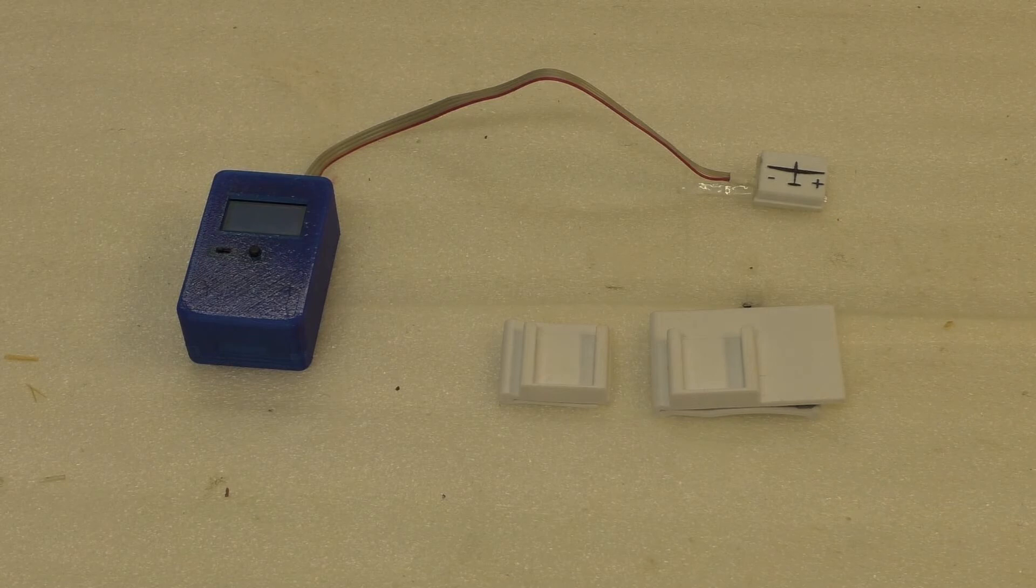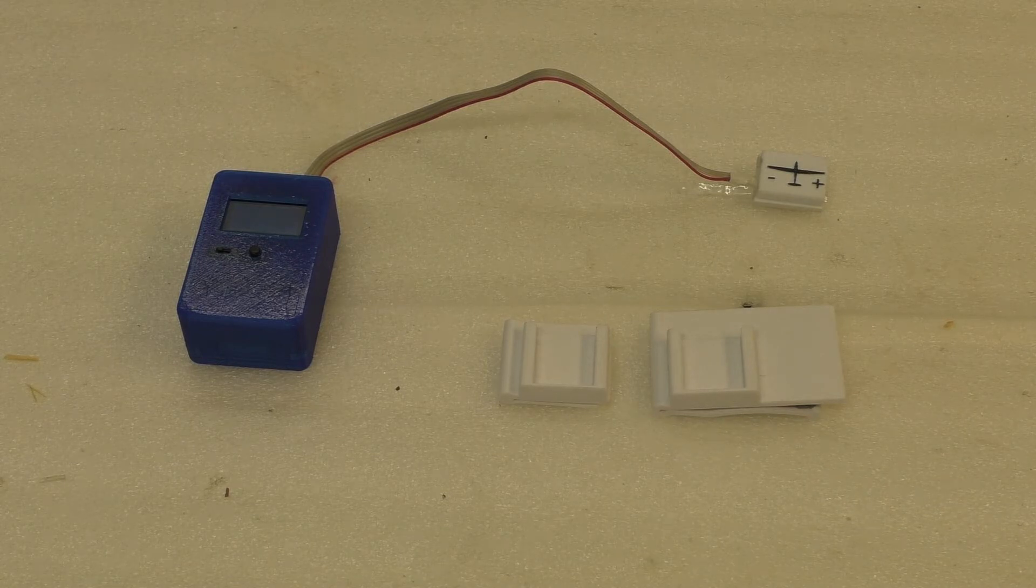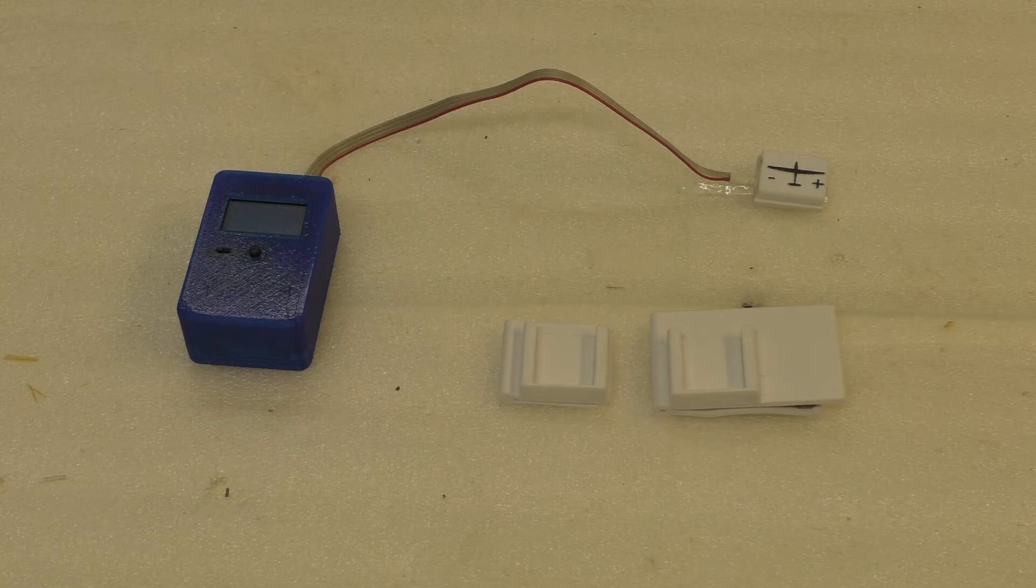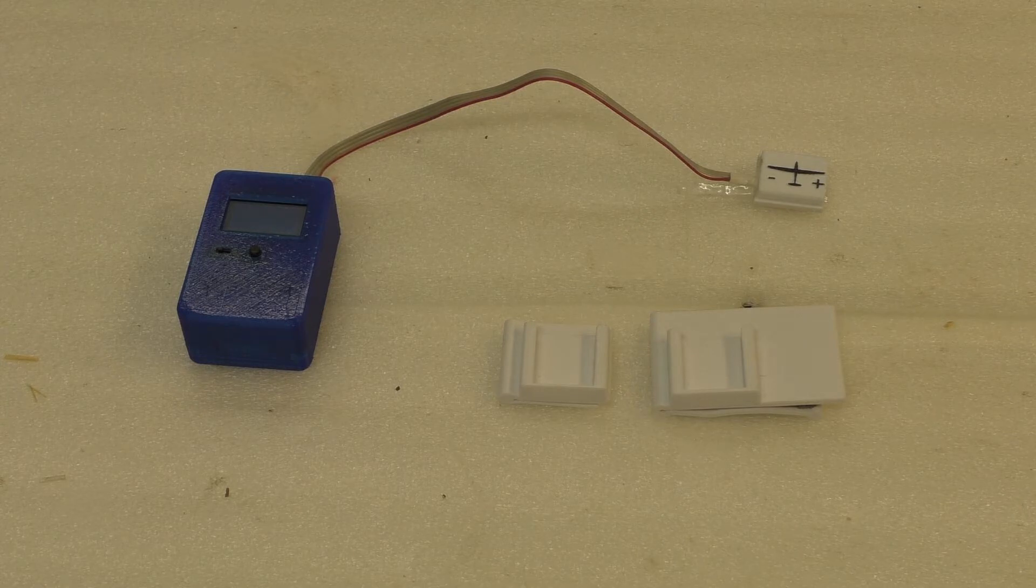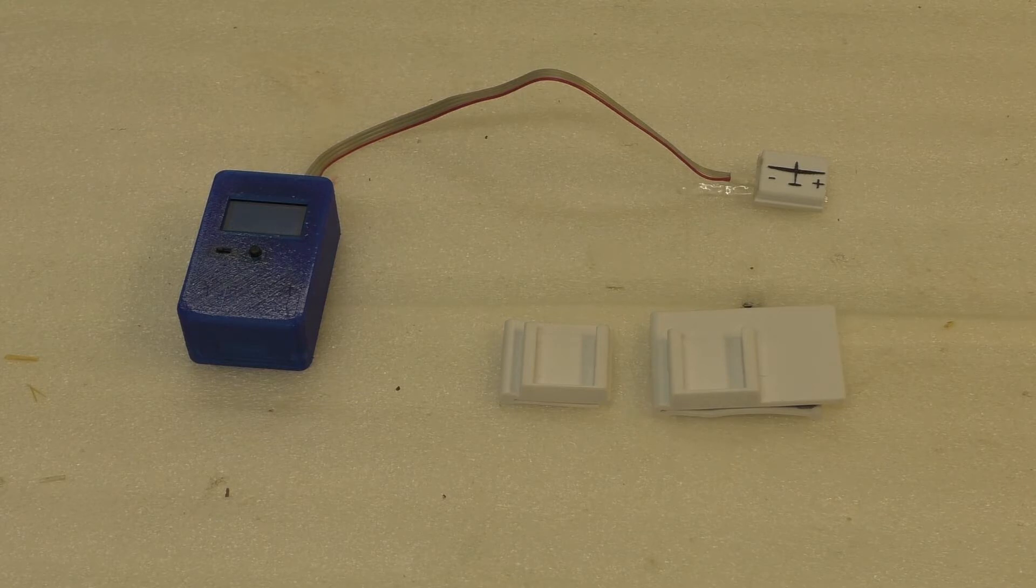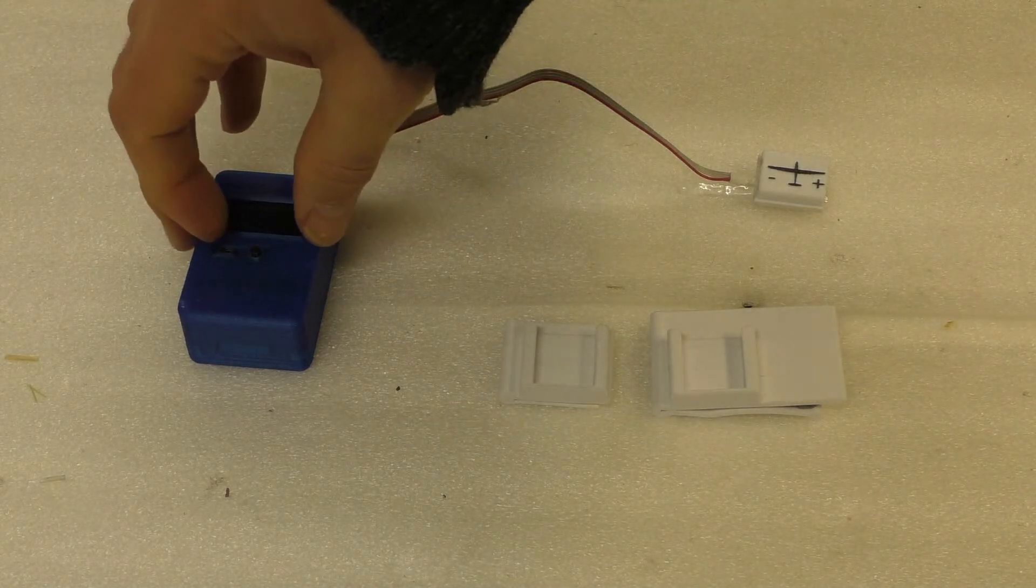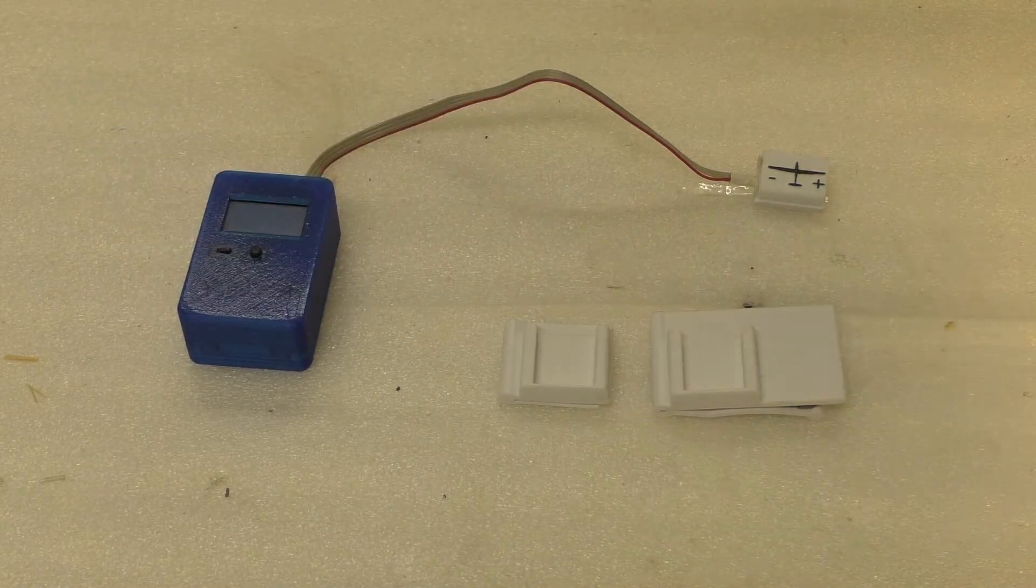Every RC model enthusiast knows the struggle to sometimes adjust all the angles, sub-trims, etc. of model glider control surfaces. Well, an electronic inclinometer to the rescue.